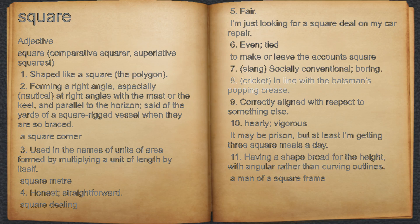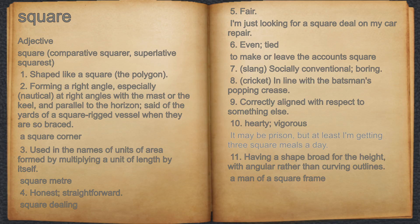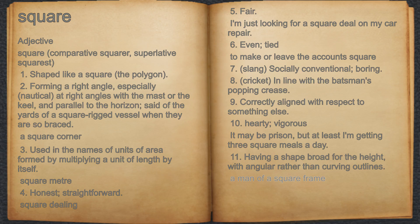28. Cricket, in line with the batsman's position. 29. Correctly aligned with respect to something else. 30. Hardy, vigorous. For example, it may be prison, but at least I'm getting three square meals a day. 31. Having a shape broad for the height, with angular rather than curving outlines. For example, a man of a square frame.